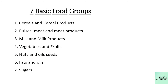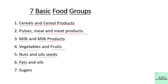We have divided food into seven basic food groups for a balanced diet for better health. These seven basic food groups are: cereal and cereal products, pulses, meat and meat products, milk and milk products, vegetables and fruits, nuts and oil seeds, fats and oils, and sugars.